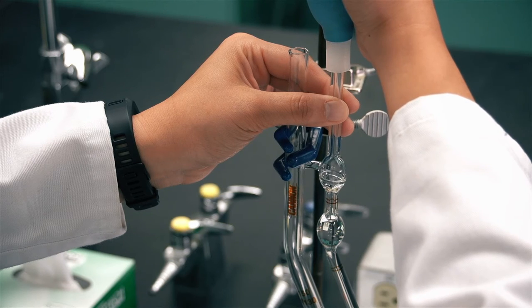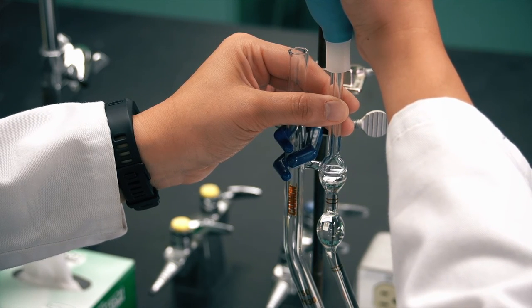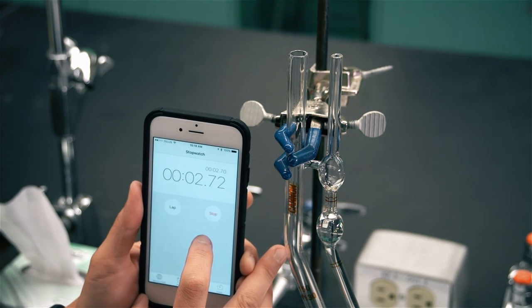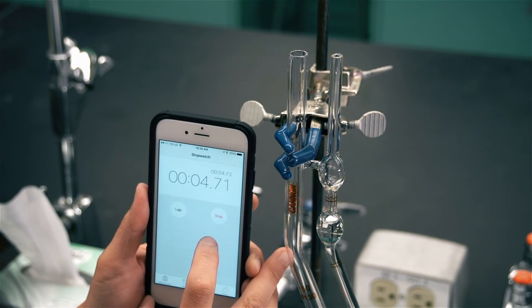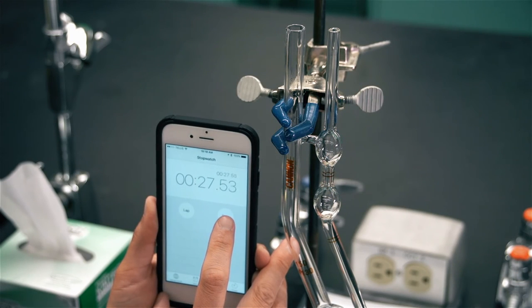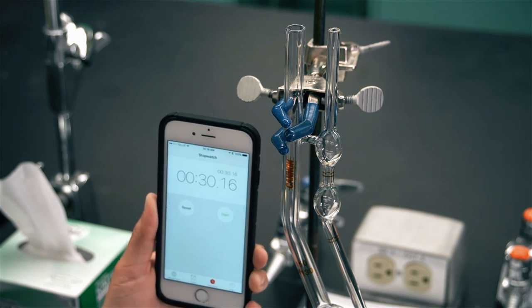Use a suction bulb to draw the liquid into the upper bulb of the viscometer. Use a stopwatch to measure the time for the meniscus to drop from the upper line on the viscometer to the lower line. Start the stopwatch when the meniscus touches the upper line and stop when the meniscus touches the lower line.